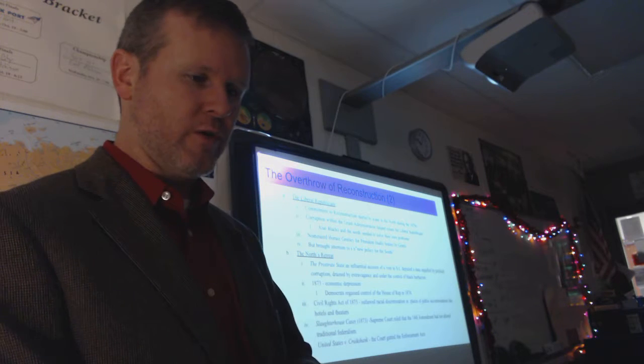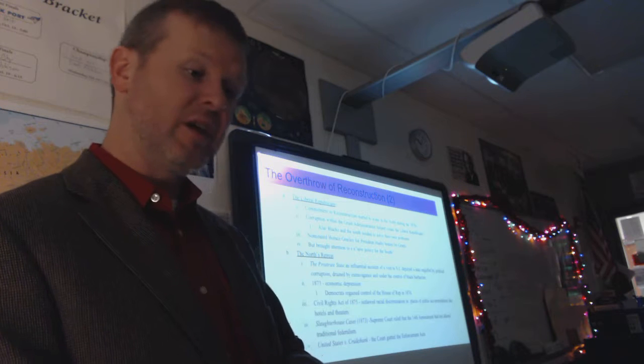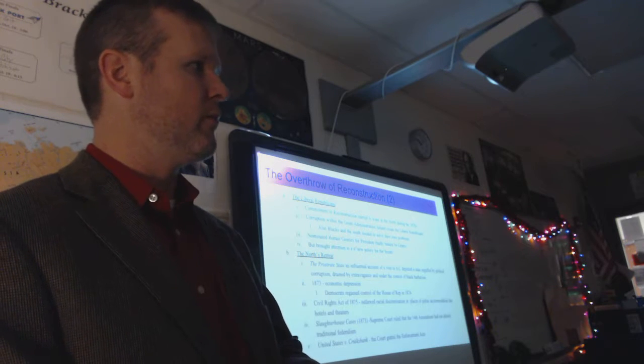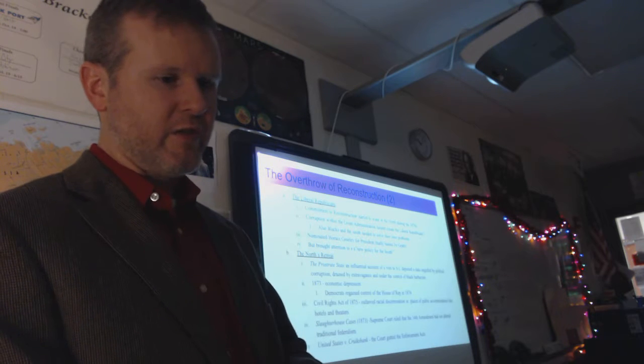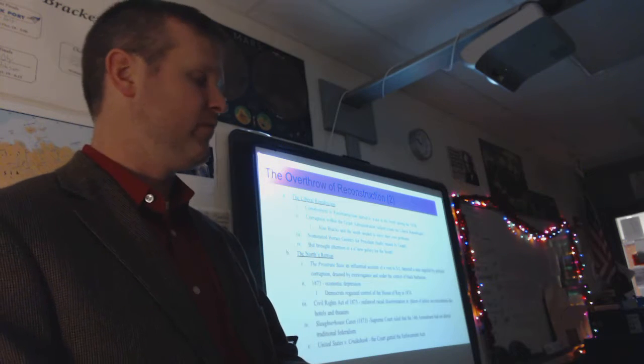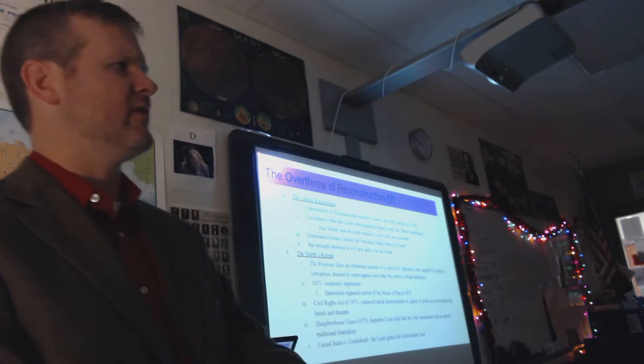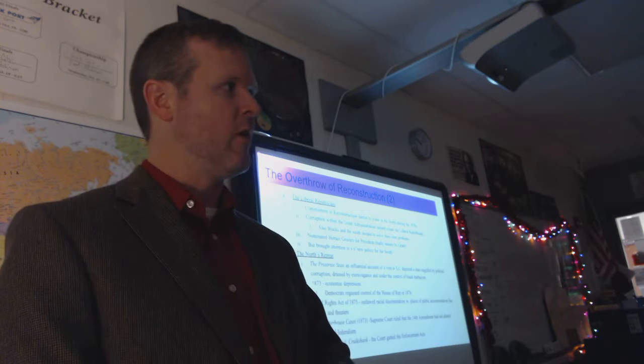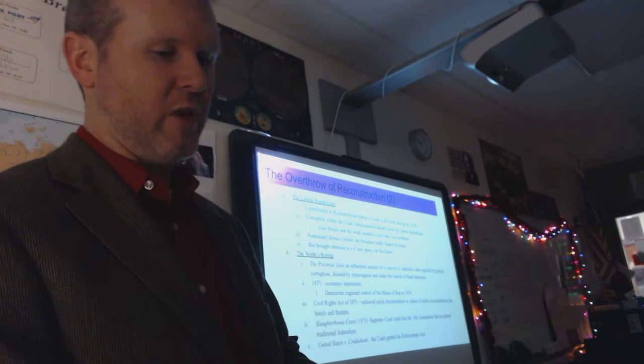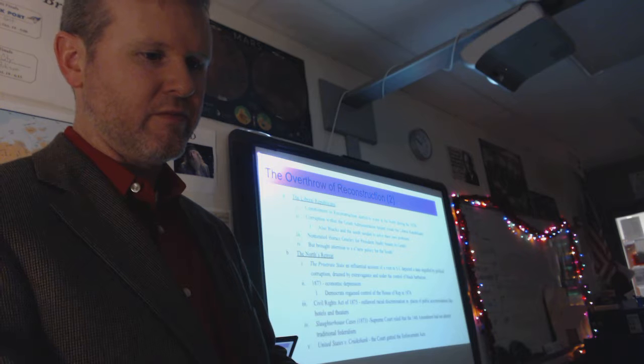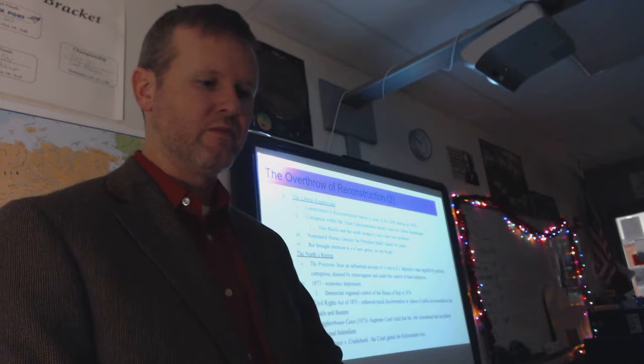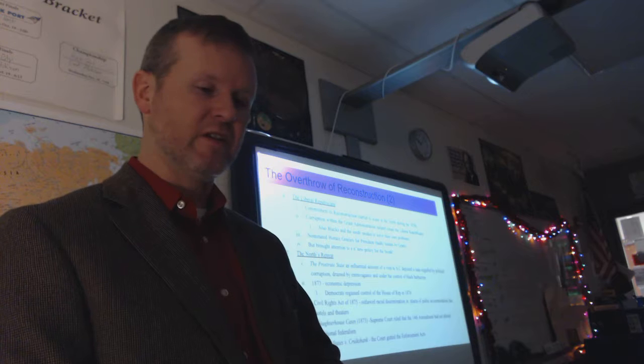In 1873, economic depression will hit. Railroads are going to make a major nosedive economically. Democrats regained control of the House for the first time in many years in 1874, and they're going to start forcing issues to basically bring reconstruction to an end. Civil Rights Act of 1875 outlawed racial discrimination in places of public accommodation, like hotels and theaters. Now, slaughterhouse cases of 1873 Supreme Court ruled that the 14th Amendment had not altered traditional federalism, which is a hit on some of these civil rights.